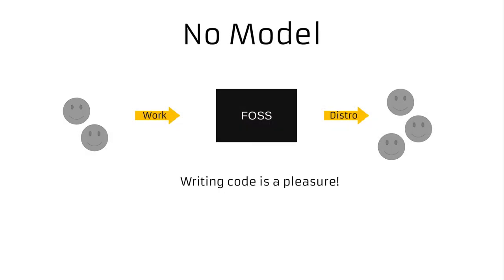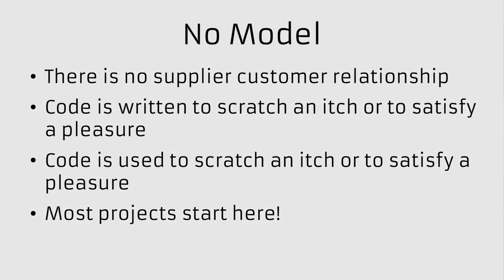The next model is quite fun — it's the no model. It's very common to start from here. There are startup-based open source projects, but a lot of classical open source projects that build from an itch that somebody scratches for themselves come from here. Basically no model — you might be paid to work on it, you might not. There are no customers, no supplier-customer relationship, just a user-developer relationship that might be rewarding but with no guarantees in either direction.